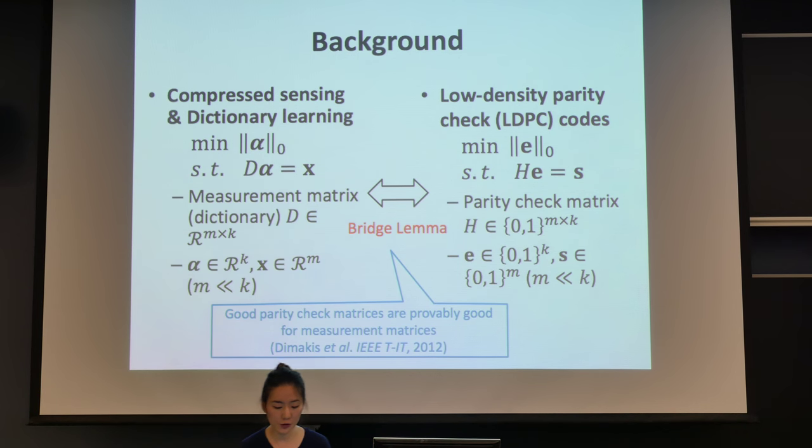So in 2012, Demarcus Etta showed a bridge lemma, which connects these two different concepts. What it's basically saying is that good parity check matrices in LDPC codes are also good for measurement matrices in a compressed sensing setup.